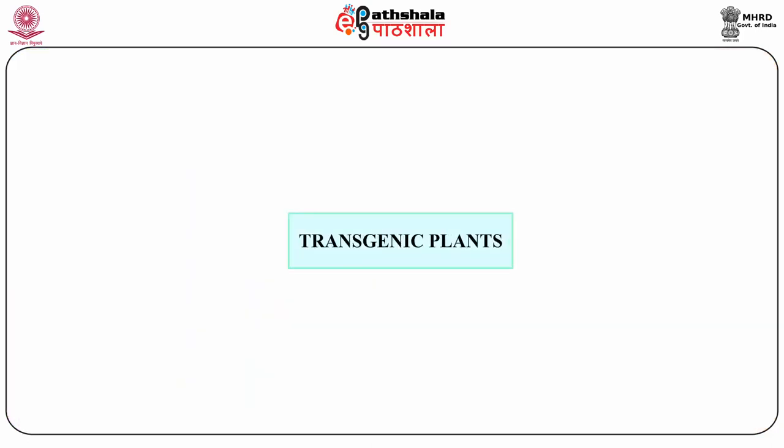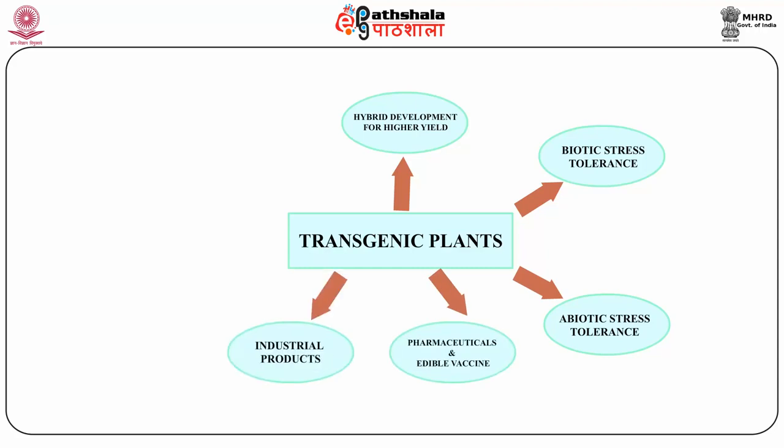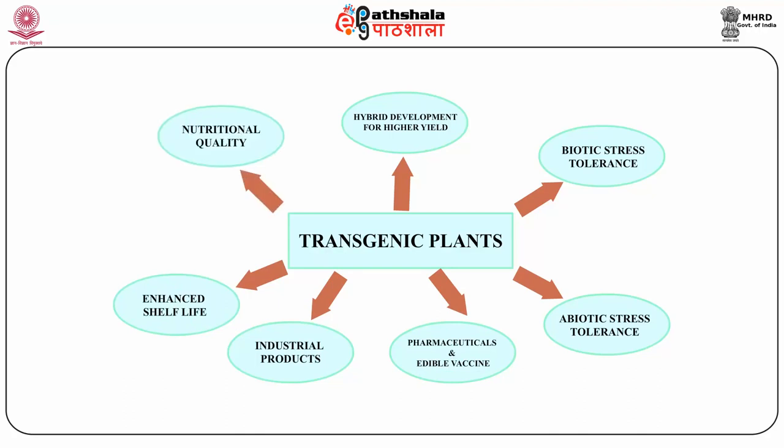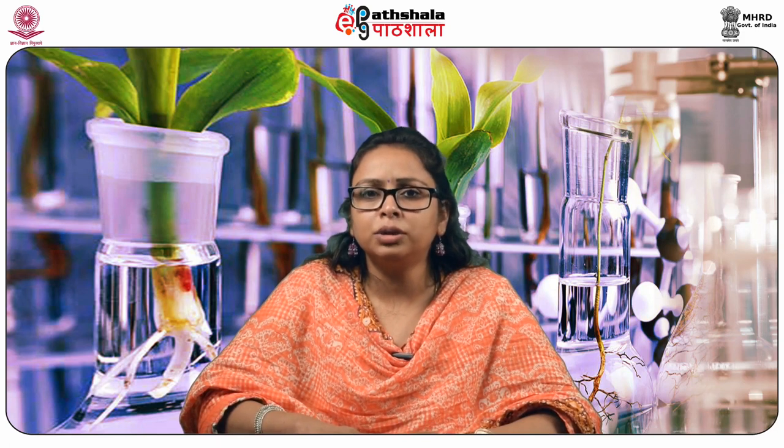Alternatively, DNA recombinant and gene transfer technology can be used alongside traditional breeding methods. Transgenic plants are variously used for hybrid development for higher yield, biotic stress tolerance, abiotic stress tolerance, pharmaceutical and edible vaccines, industrial products, and enhanced shelf-life and nutritional quality. Commonly used transformation methods are vector-based for dicotyledons and the direct transfer method (biolistic) for monocots.